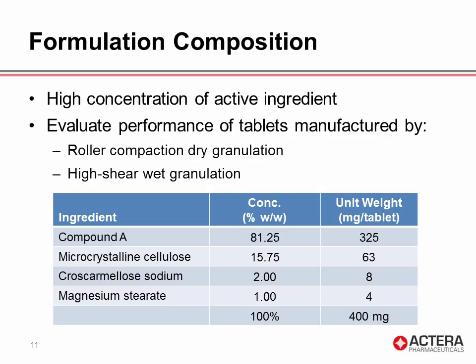Now we're going to switch over to formulating the milled active ingredient that we just characterized into a tablet. The active ingredient concentration is high, at greater than 80% in this formulation. We've also added microcrystalline cellulose as a common filler, cross-carmellose sodium as the disintegrant, and magnesium stearate as the powder lubricant. We will be comparing the performance of tablets made by roller compaction, which is the dry granulation process, and a high-shear wet granulation process.